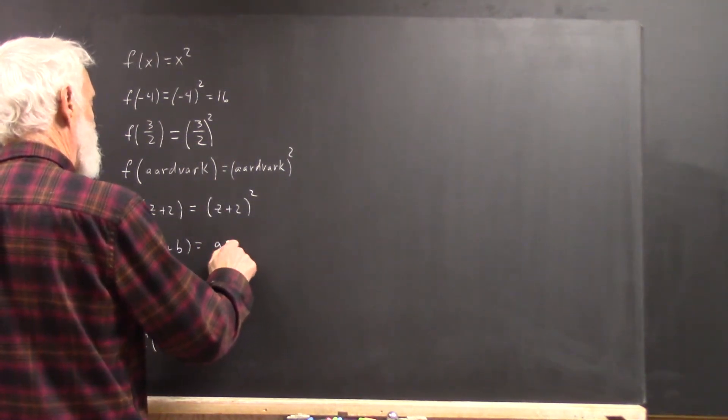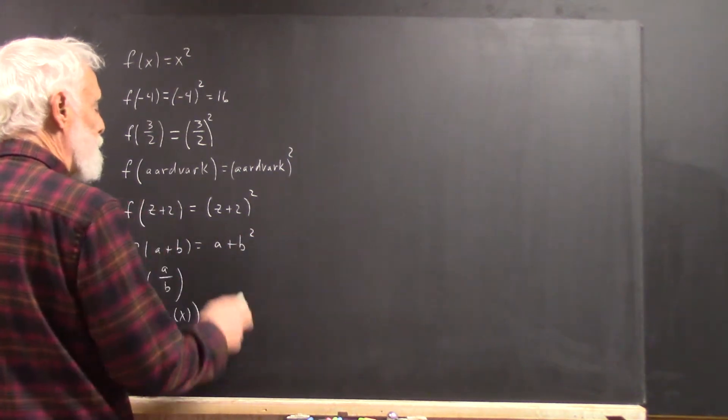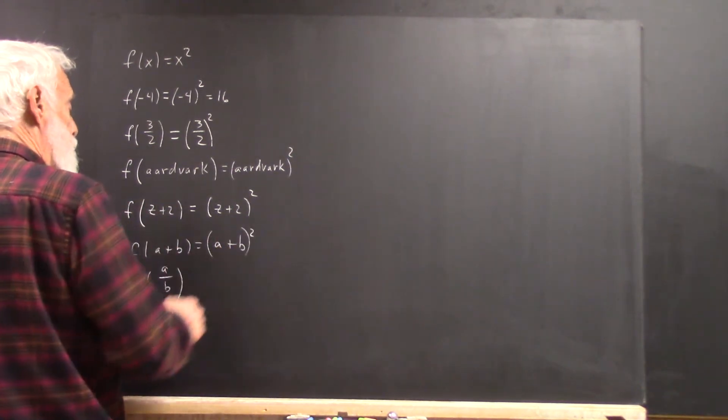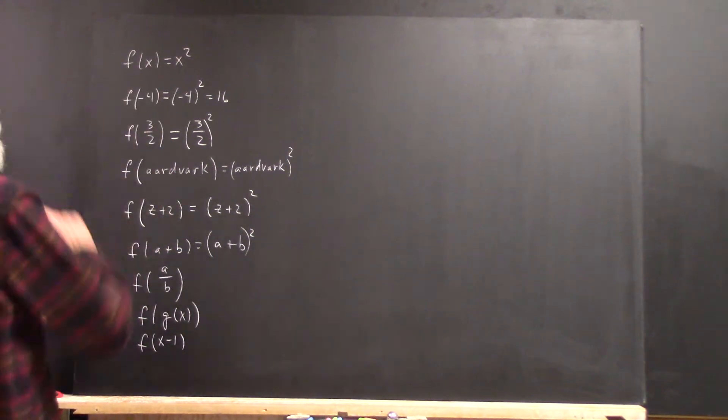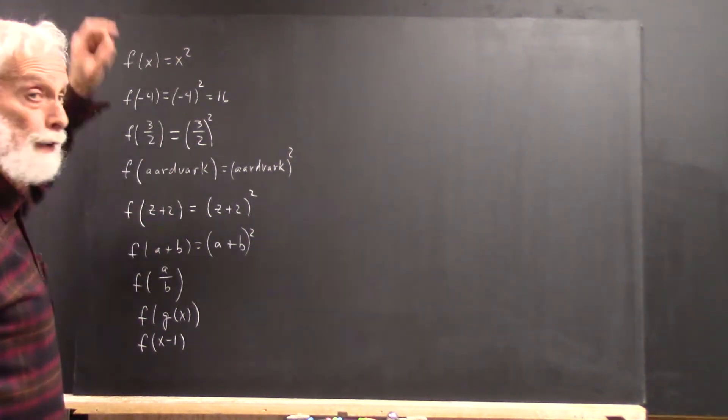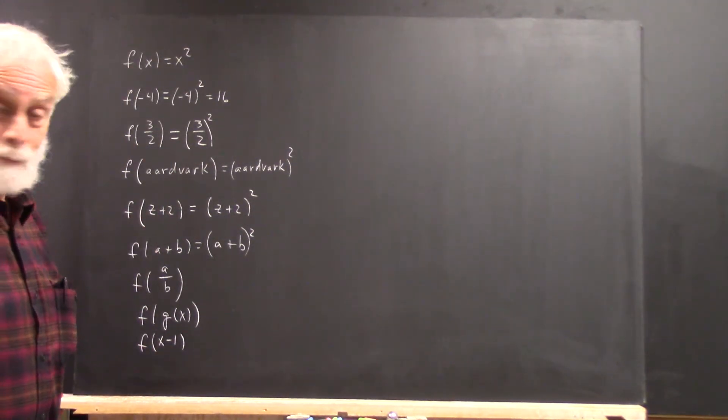And not a plus b squared, which means only b gets squared. Whatever's in here is getting squared, because whatever's in here is x and x is getting squared, right?